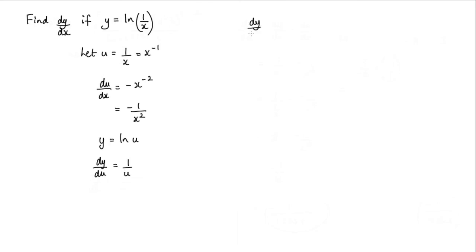Now we want dy by dx. And this is where we can use the chain rule. So dy by dx is dy by du multiplied by du by dx. Now dy by du we know is 1 over u multiplied by du by dx, which is negative 1 over x squared.